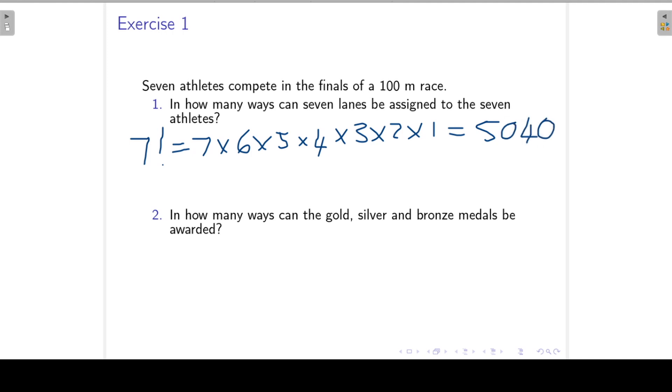Then the second one: in how many ways can the gold, silver, and bronze medals be awarded? So we have seven athletes. Only three of them can receive a medal and the ordering in which they receive these medals is important. So this is a permutation, seven permutation three.